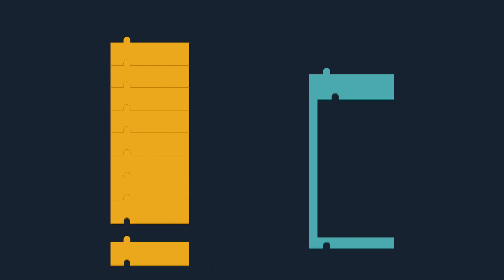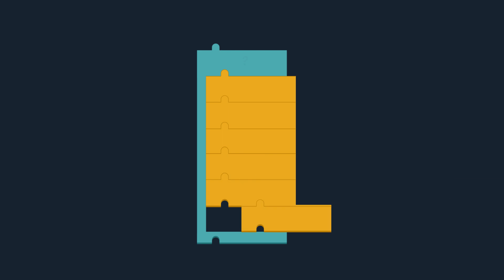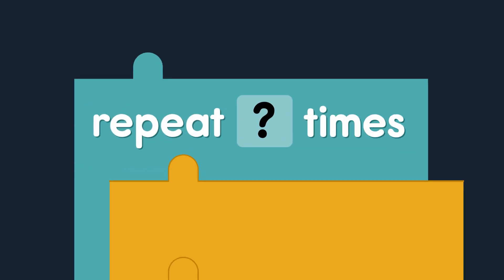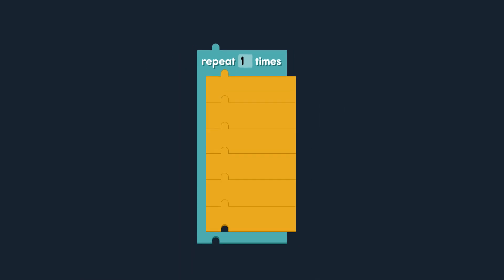Instead of writing everything many, many times, you put it in a loop and write it one time. Set up a loop, put the stuff inside. Then there's only one thing left to decide — tell the loop how many times to repeat. That's it. The loop's pretty much complete.